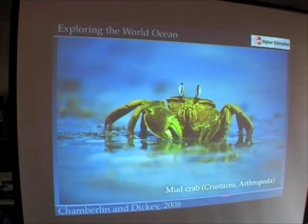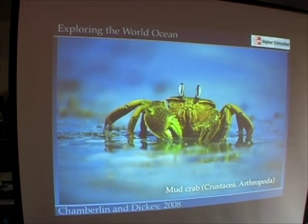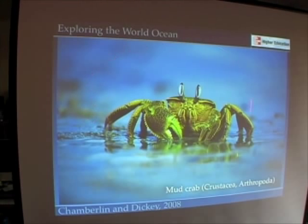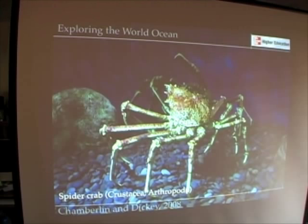Here's a crab, also a member of the crustaceans and arthropods. What you should be realizing now is all the different kinds of crustaceans and arthropods that we find in the ocean. Just like insects are the most numerous species in the terrestrial biosphere, arthropods are right up there with mollusks as being the most abundant in the marine biosphere. Crabs are fascinating for a lot of different reasons — maybe partly because you like to eat them, but I prefer just watching them. Here's a spider crab, very similar in appearance to the Alaskan king crab.